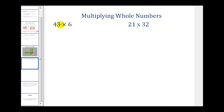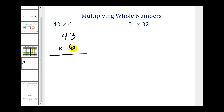If we want to find the product of 43 and 6, we first write this in vertical form. We multiply 6 by 3: 6 times 3 is 18, so we write down the 8 in the ones column and carry a 1 to the tens column. Then 6 times 4 is 24, plus the carried 1 gives us 25. So 43 times 6 is equal to 258.